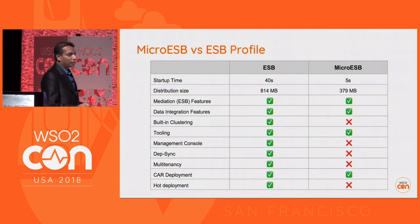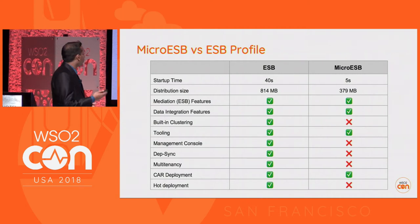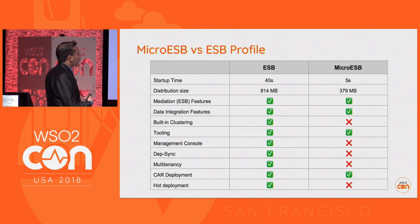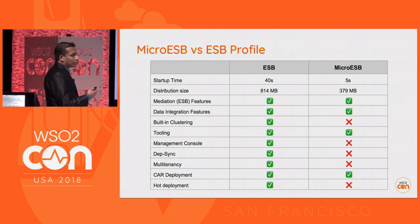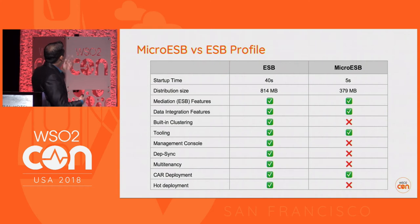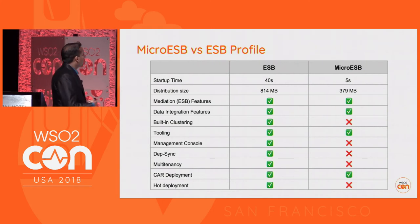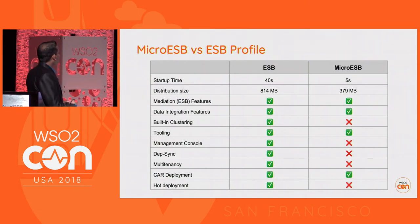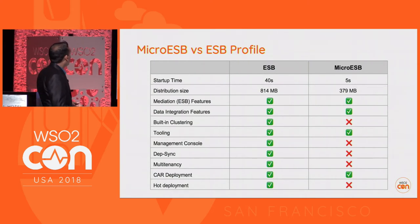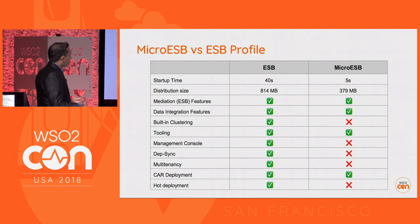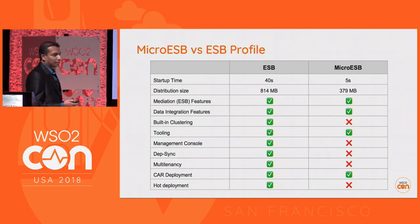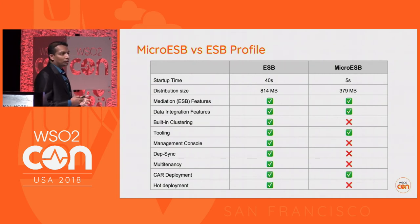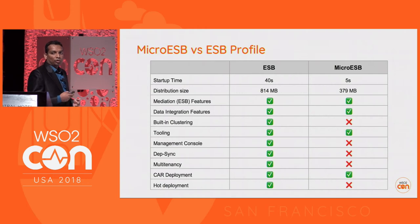Here is a comparison of Micro ESB and the conventional ESB profile. As you can see, the startup time is drastically reduced from 40 seconds to 5 seconds, and the distribution size is also reduced. All the key mediation and data integration features are present in both profiles. Some features like clustering, deployment synchronization, and multi-tenancy have been removed. Tooling support and CAR deployment are still supported in both profiles.